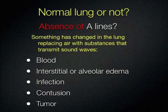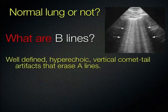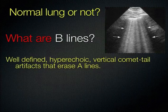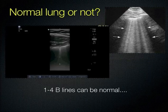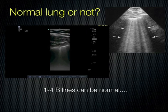Now we get into B-lines. B-lines are vertical artifacts that erase the A-lines. A normal aerated lung has A-lines, but if you have B-lines, these are artifacts created by fluid in the lung that will obliterate the A-lines. Normally you can have a couple of small comet tails that are normal — up to three or four. But if you have multiple diffuse B-lines in multiple fields, that is abnormal — that is fluid that has overtaken the air in the lung.